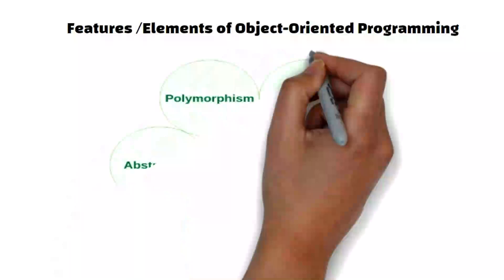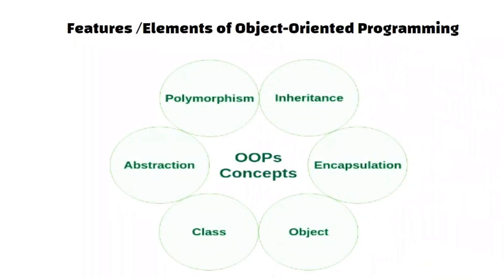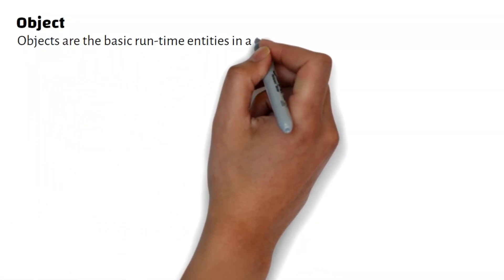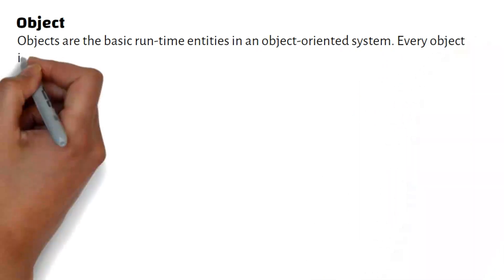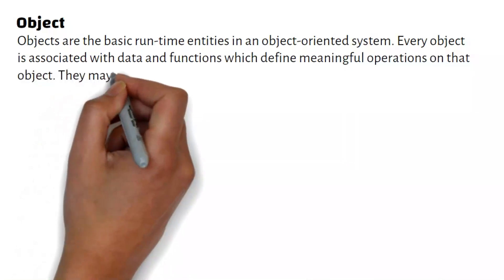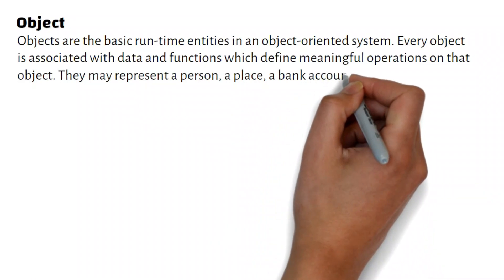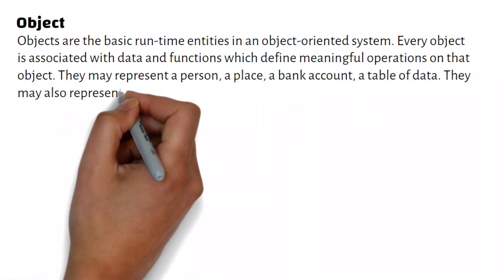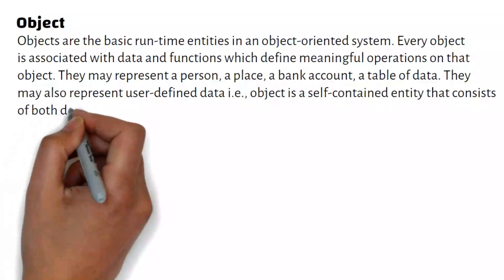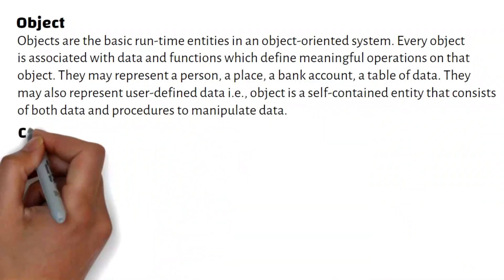Features and elements of object-oriented programming. Objects are the basic runtime entities in an object-oriented system. Every object is associated with data and functions which define meaningful operations on that object. They may represent a person, a place, a bank account, or a table of data. They may also represent user-defined data. An object is a self-contained entity that consists of both data and procedures to manipulate data.